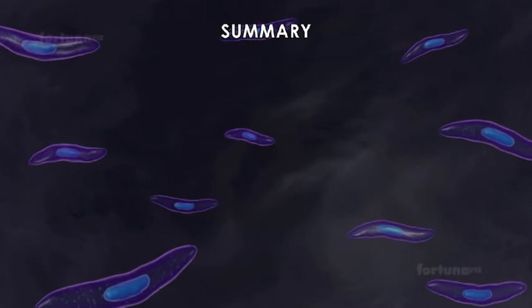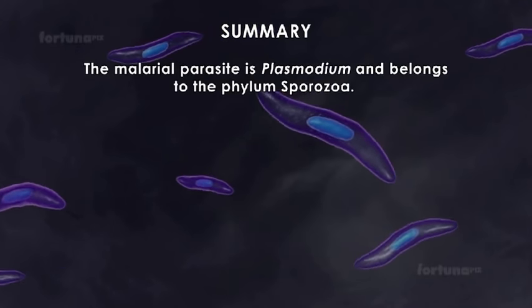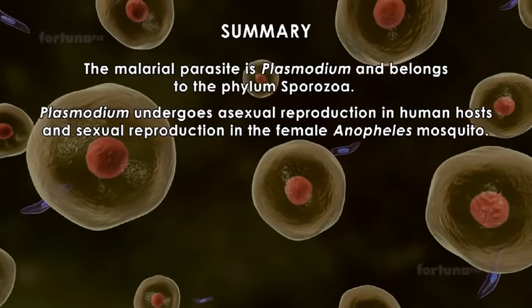Summary: The Malarial Parasite is Plasmodium and belongs to the Phylum Sporozoa. Plasmodium undergoes asexual reproduction in human host.